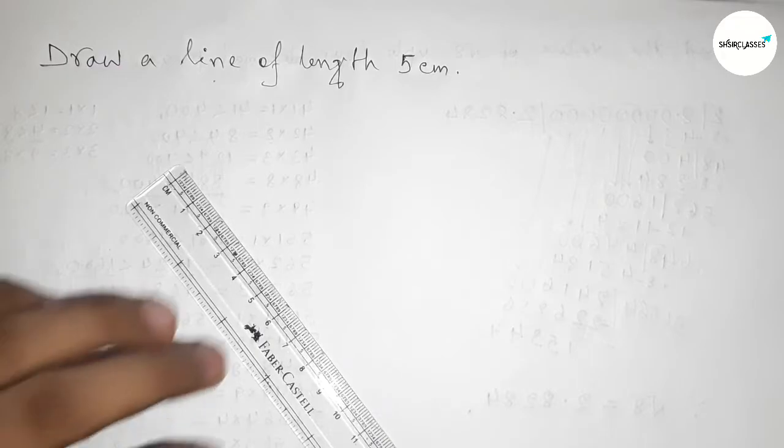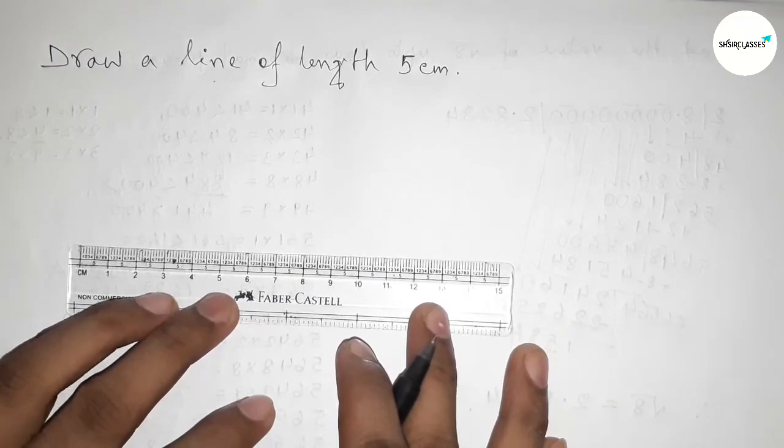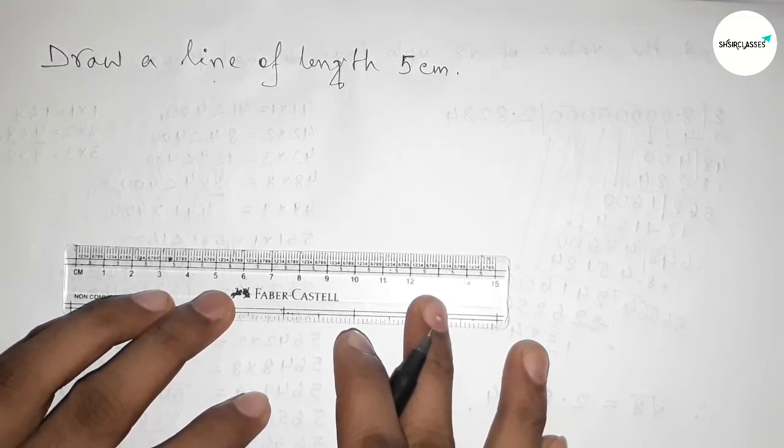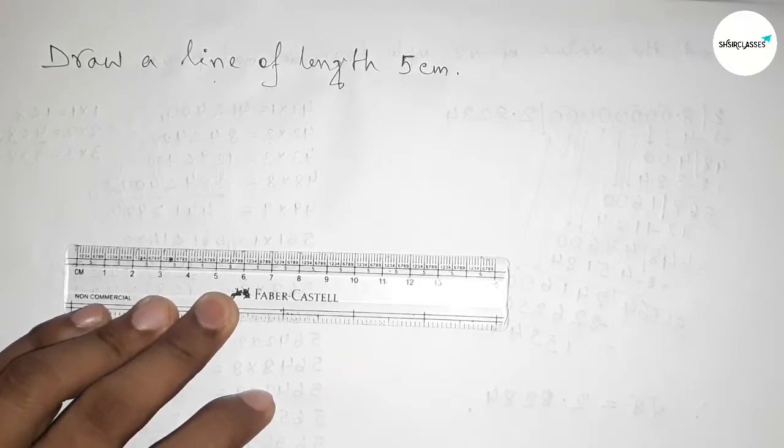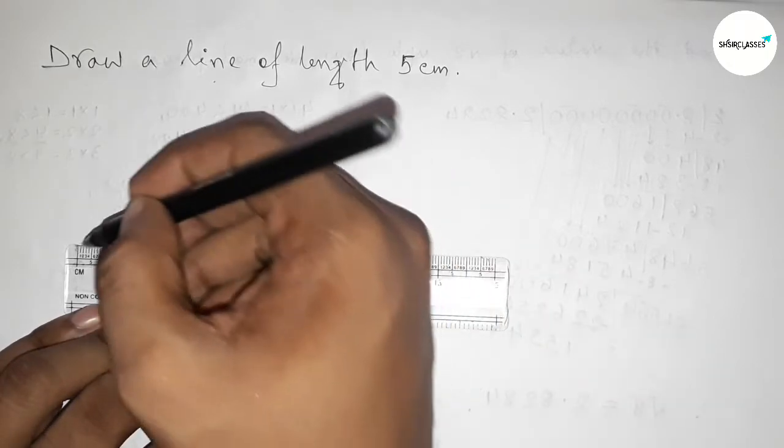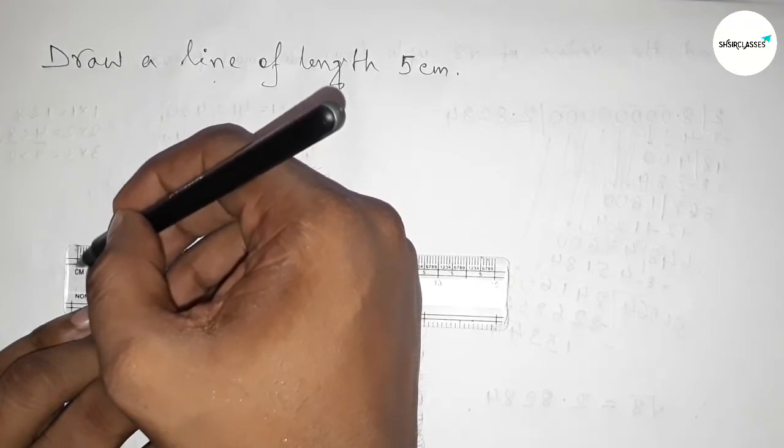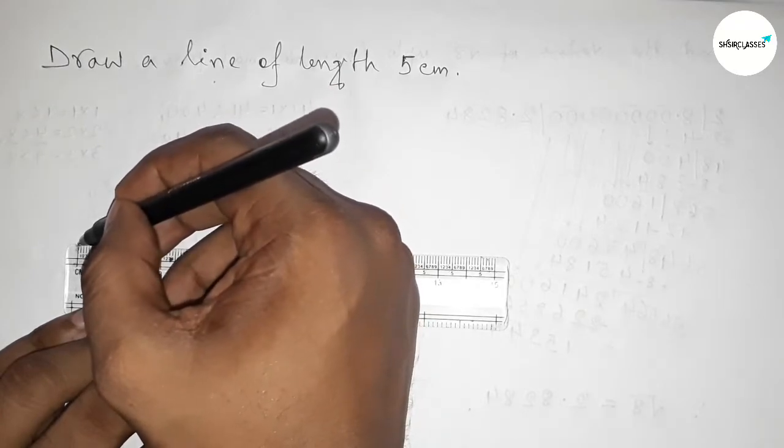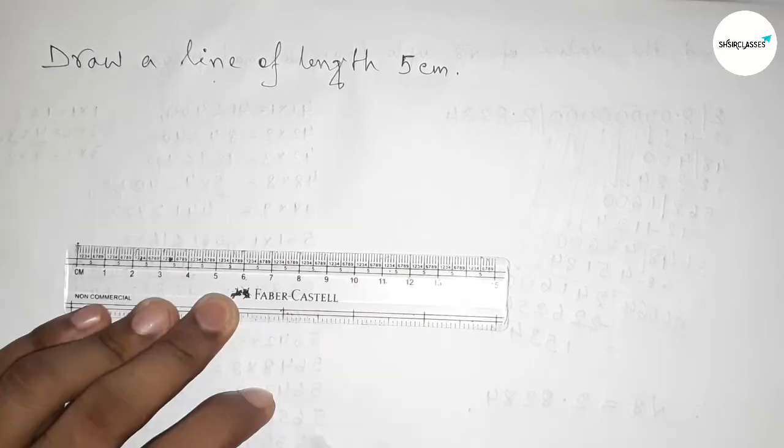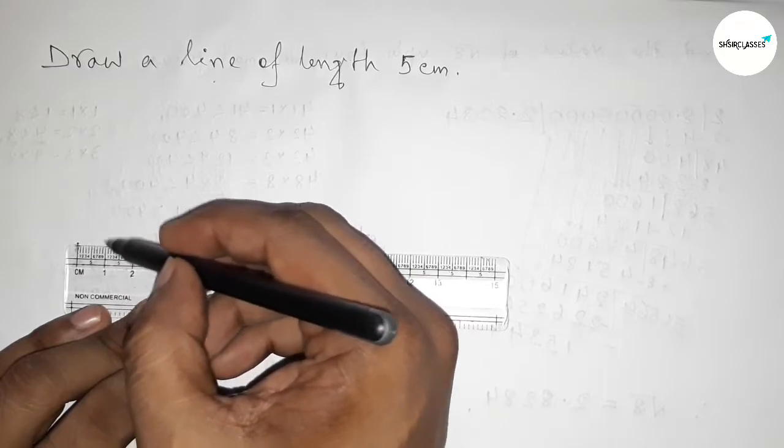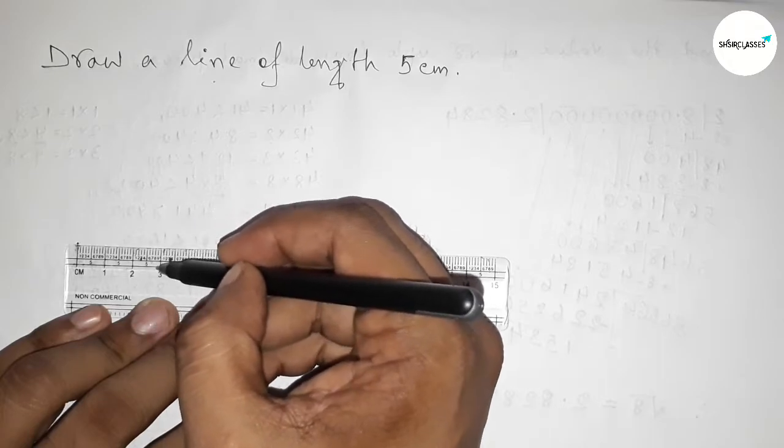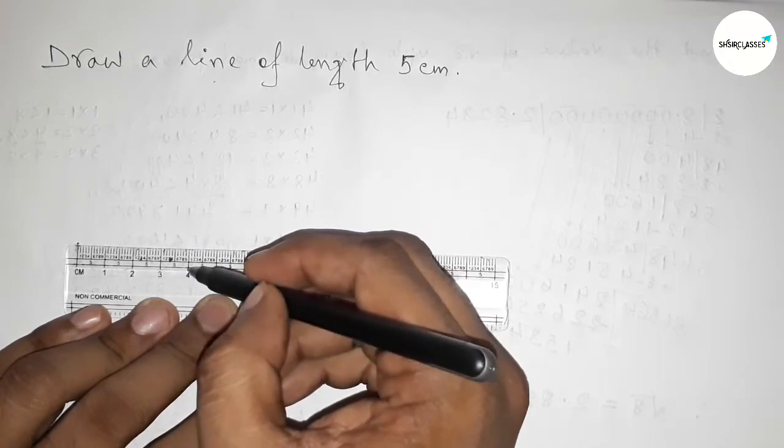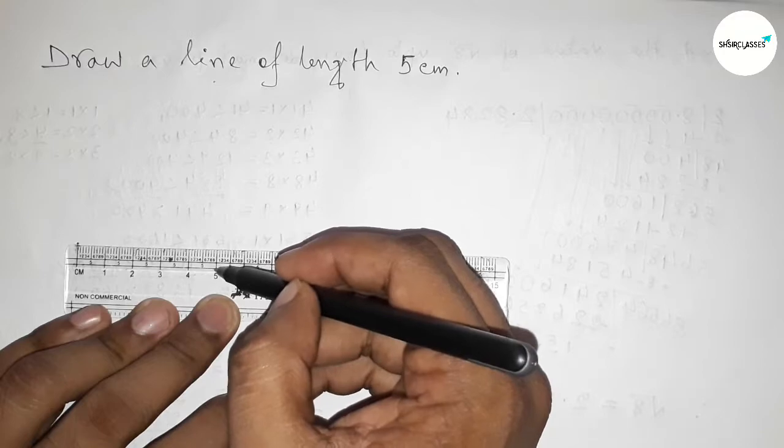First, putting the scale by this way and now measuring 5 centimeter. So this is here starting 0, so first marking the 0. Now measuring the length 5 centimeter, so from 0 this is 1 centimeter, this is 2 centimeter, this is 3 centimeter, this is 4 centimeter, and this is 5 centimeter.